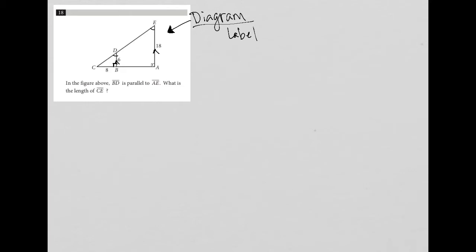What is the length of CE? So what I'm trying to find is this entire length here. What else can I label? Well, I have a 6 here and an 8 here. I could figure out what CD is because triangle CDB — I'll just draw it over here — is a right triangle with sides 6 and 8.